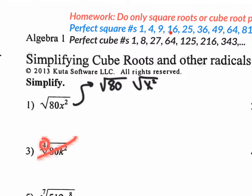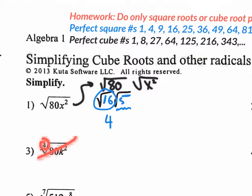On your calculator, 80 divided by 16 gives you 5, so you know 16 times 5 is 80. You're going to rewrite it as 16 times 5 and split the square root. The square root of 16 is just 4, and the square root of 5 stays as the square root of 5.